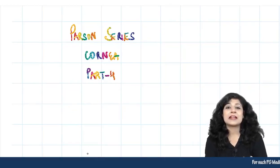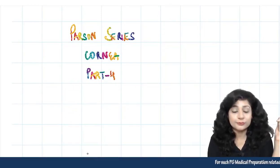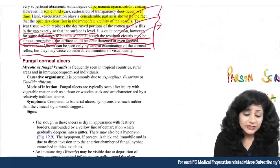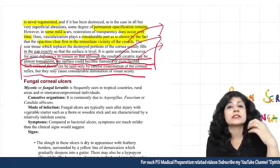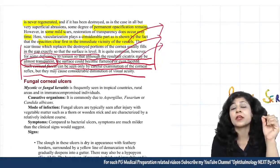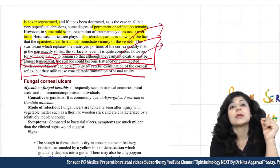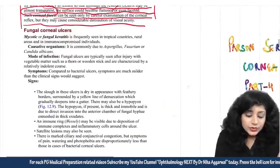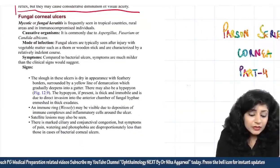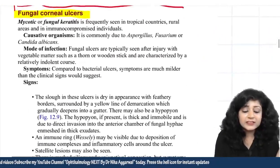Welcome to the Parson series, part four on the cornea. We had covered bacterial corneal ulcer previously. Today we are going to start with the fungal corneal ulcer, which is also called mycotic keratitis or fungal keratitis.